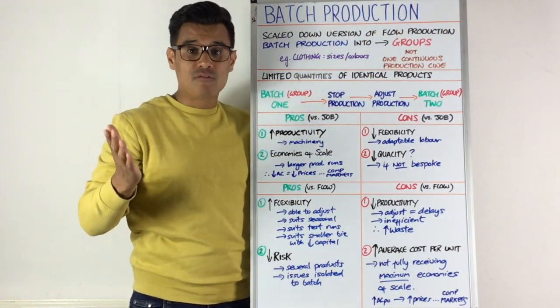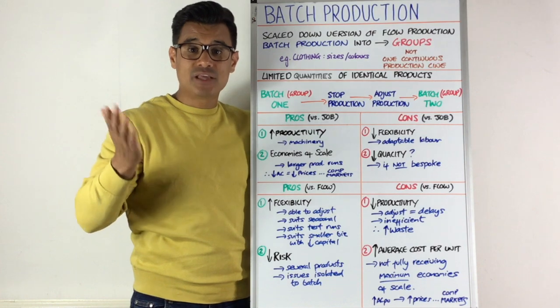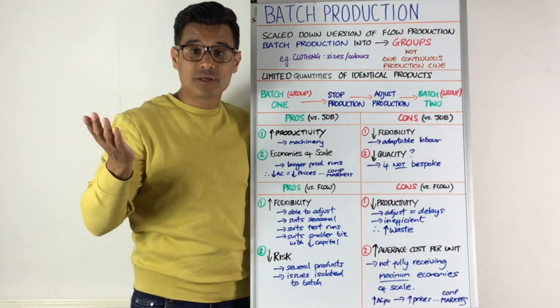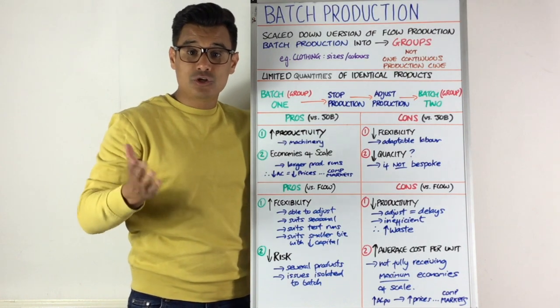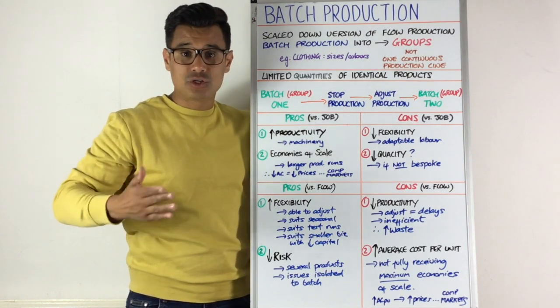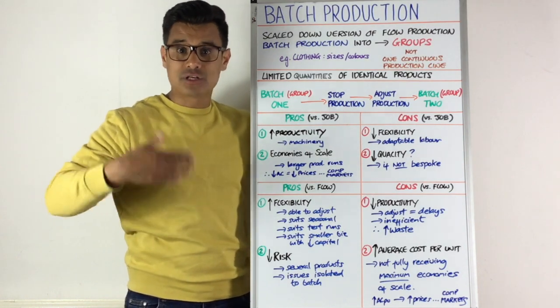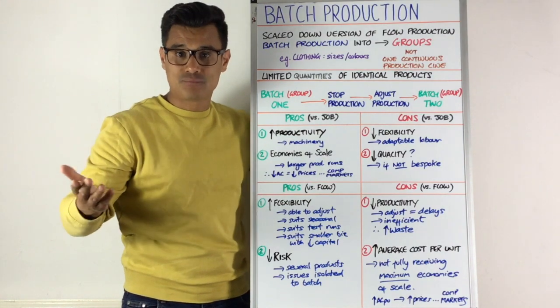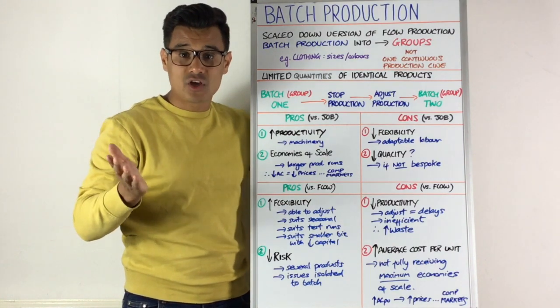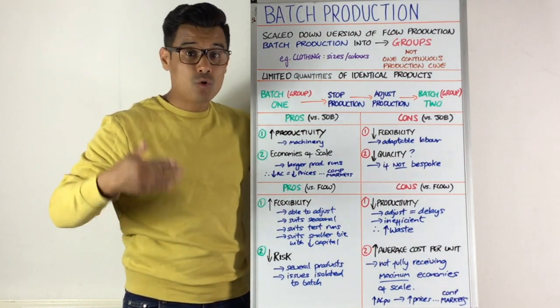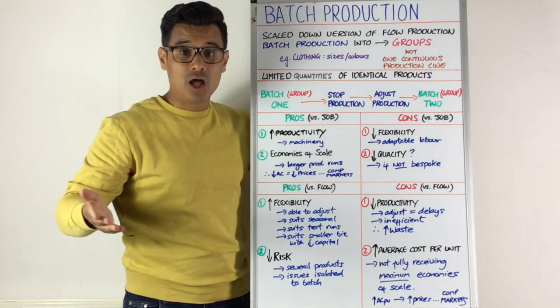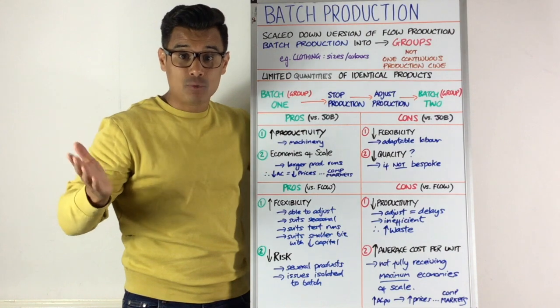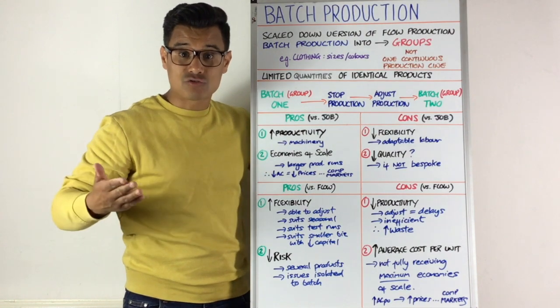A great example of batch production is with clothing, because with clothing you can have different colours — you can have yellow, red, blue, and brown — and you can have different sizes: small, medium, large, and if you're a big boy, extra large.